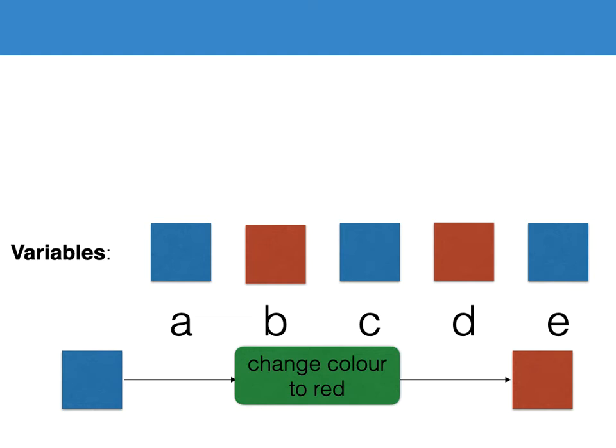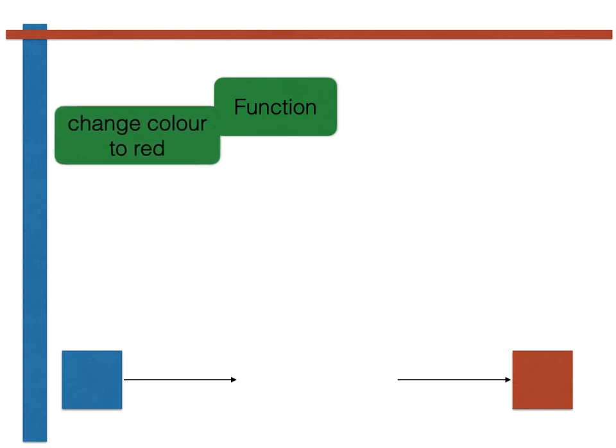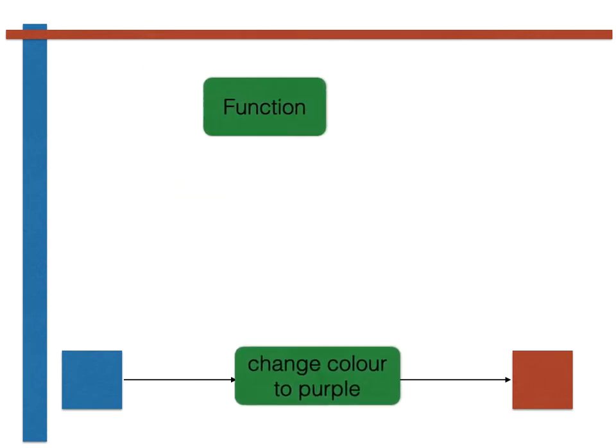As discussed at the start of the video however, the set of instructions in the function are themselves stored in the memory of the computer. We might therefore imagine a new kind of function that takes a function as input as shown here. This function would then change the instructions that are stored in the memory that holds the function. In this case the function thus no longer changes the variables from the blue state to the red state. It now changes them to the purple state as shown here.